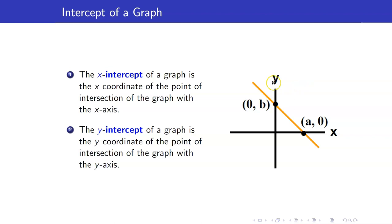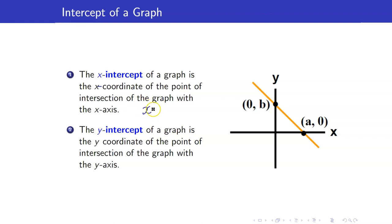For example, let's say that the graph of a function is a line, and the graph intersects the x-axis at the point (a, 0). The x-intercept is the x-coordinate, so the x-intercept here is x equals a.